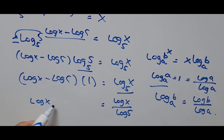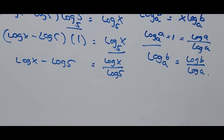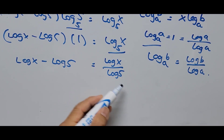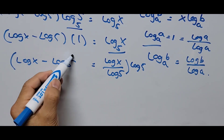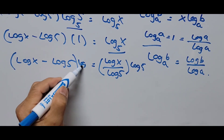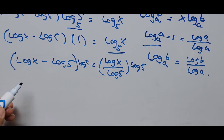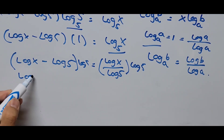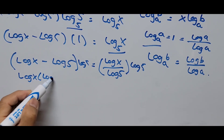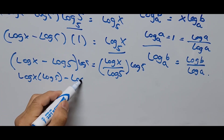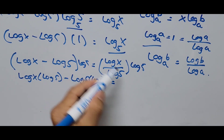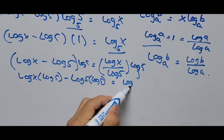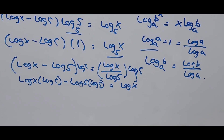From here we get rid of the denominator, log of 5, by multiplying the whole equation by log of 5. The equation now becomes: log of X times log of 5 minus log of 5 times log of 5, equals log of X — the log of 5 in the denominator cancels with the multiplied log of 5.